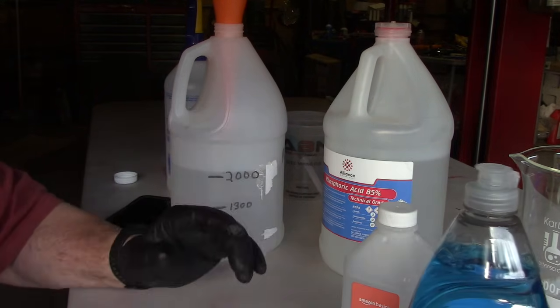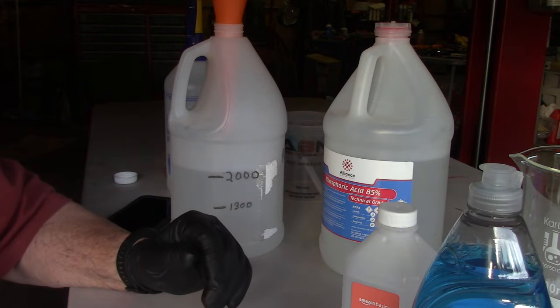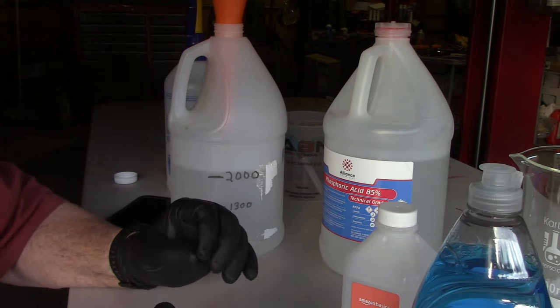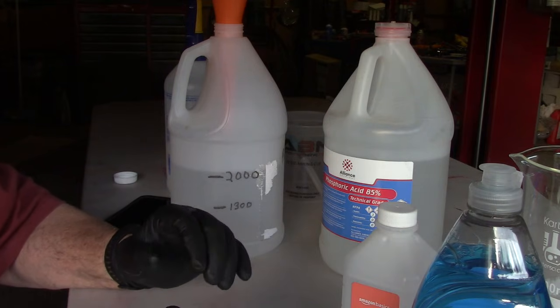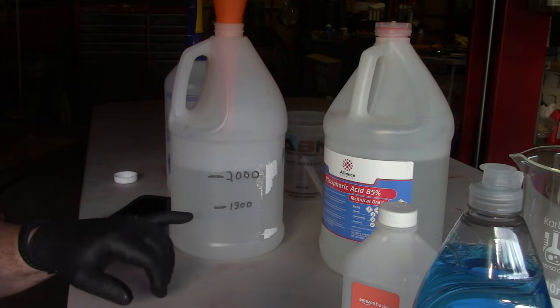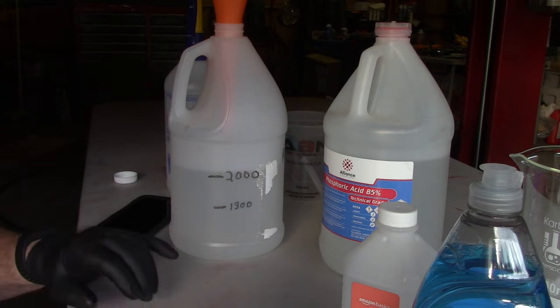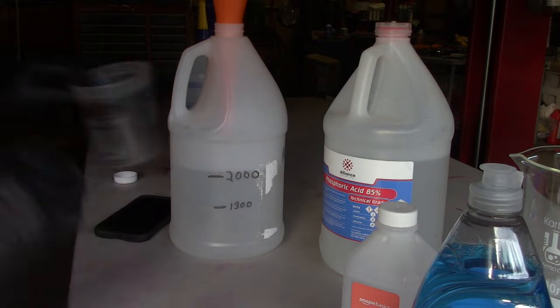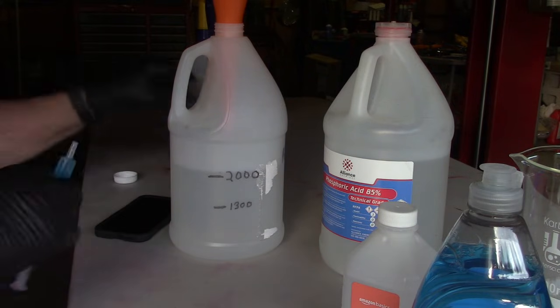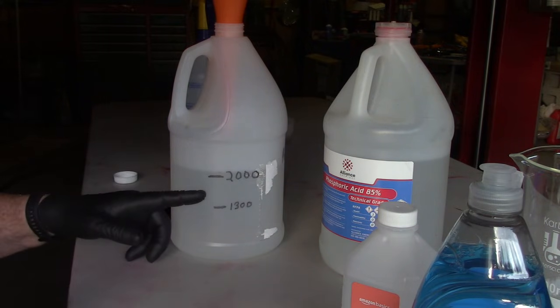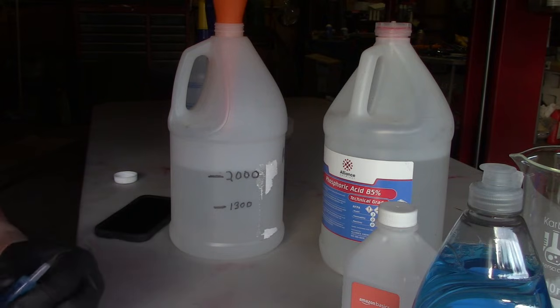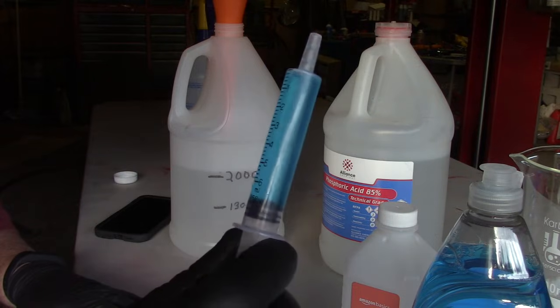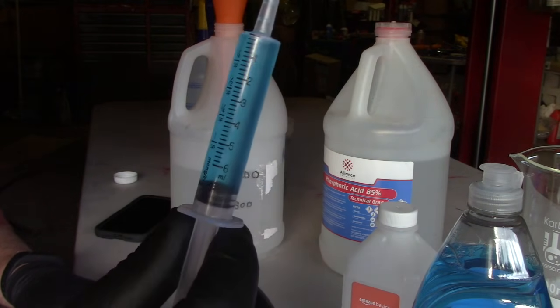Now as far as the amount of dish soap, it's about a tablespoon per gallon, which works out to about four milliliters per liter of solution here. And what I did is since I have two liters, that means you would want eight milliliters of dish soap.